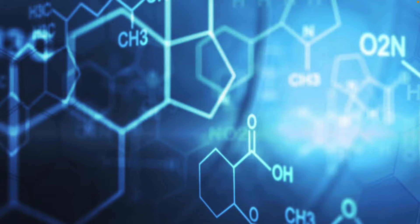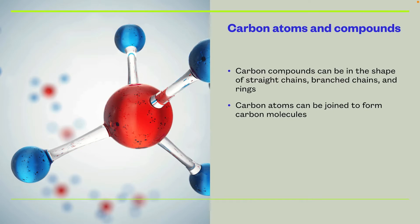Carbon atoms and compounds. Carbon compounds can be in the shape of straight chains, branched chains, and rings. Carbon atoms can be joined to form carbon molecules. As you can see, this is what the atoms look like: this big red circle in the middle and the other blue circles on the outside which is connected.